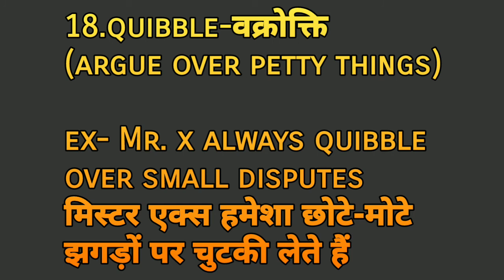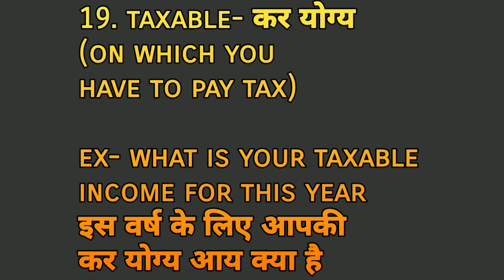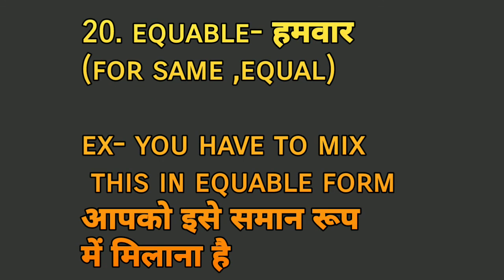'Taxable' means 'kar yogya' — on which you have to pay tax. For example: 'What is your taxable income for this year?' — is saal ke liye aapki kar yogya aay kya hai? The last word is 'equable', meaning 'humwar' or 'baraabar' — same and equal. For example: 'You have to mix this in equable form' — aapko isse saman roop mein milana hai.